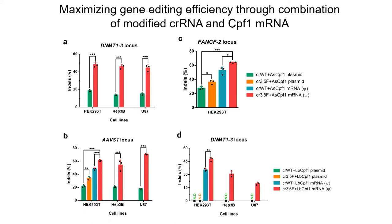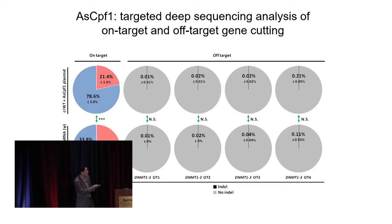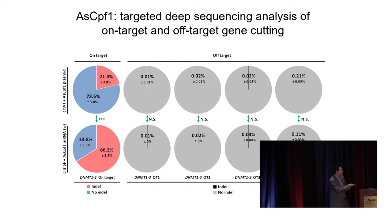Using the original unmodified combination, there was no detectable gene editing. With our modified combination, it showed over 40% gene editing across three different cell lines with consistent results. Deep sequencing confirmed the on-target gene editing efficiency: the original combination achieved about 1%, while our chemically modified guide RNA and mRNA increased it to about 66% — over a three-fold increase — with no significant change in the top four predicted off-target sites.